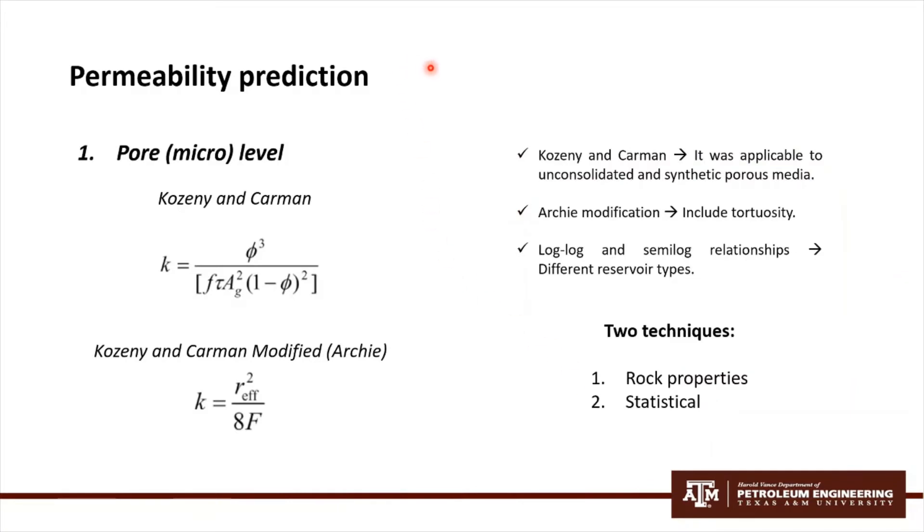Now we're going to discuss the pore micro scale models. Specifically, all of these models in general were inspired by the Kozeny-Karman relationship. This relationship is based on three terms: porosity, area, and tortuosity. Some of these characteristics are that it was applicable to unconsolidated and synthetic porous media, since grain and pore properties were easily characterized.